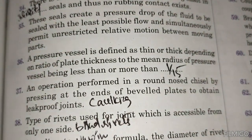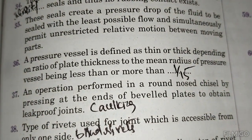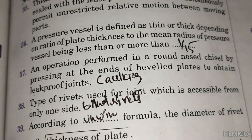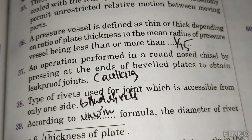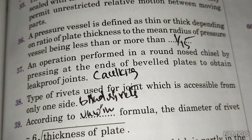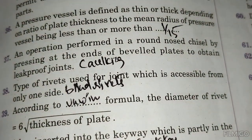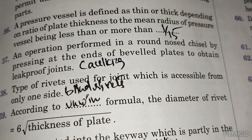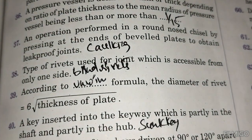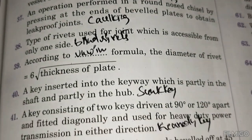A pressure vessel is defined as thin or thick depending on the ratio of plate thickness to the mean radius being less than or more than 1/15. An operation performed by pressing at the ends of beveled plates to obtain leak-proof joints is caulking. The type of rivets used for a joint accessible from only one side is blind rivets. According to Unwin's formula, the diameter of rivets is 6 times the square root of the plate thickness.